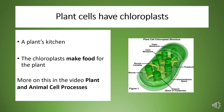Plant cells also contain chloroplasts, which is the kitchen of a plant cell. These cute little structures make food for the plant. You can find out more about chloroplasts by watching the video lesson titled Plant and Animal Cell Processes.